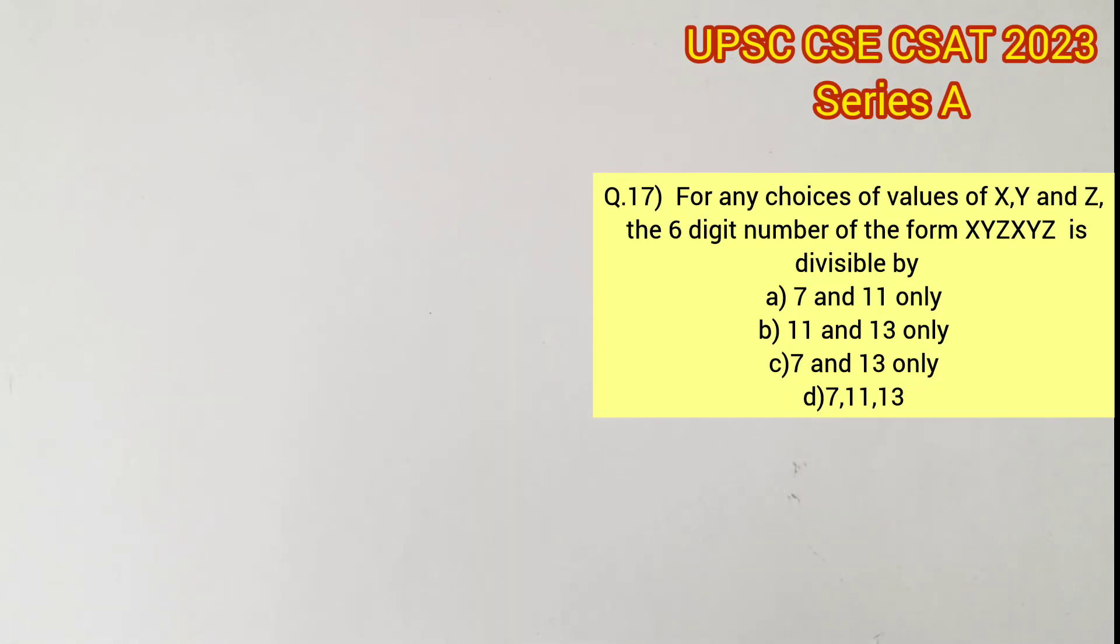Welcome to Aptitude Destination. Please pause the video and read the question completely. They have given a six-digit number of the form XYZXYZ. For any choices of values of X, Y, and Z, we are supposed to find if the value is divisible by 7, 11, and 13.